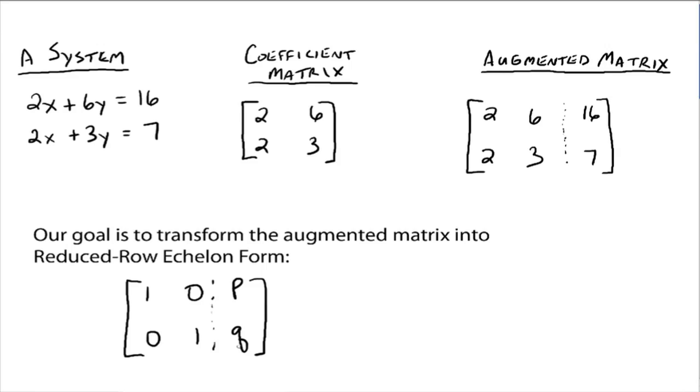Alright, now why would reduced row echelon form be useful? Well, now you can read off the answers. All right, this says 1x plus 0y equals p, or just simply x equals p. And this one down here says 0x plus 1y equals q, so y is equal to q. So if you have it down in reduced row echelon form, you can just read off the solutions real quick.